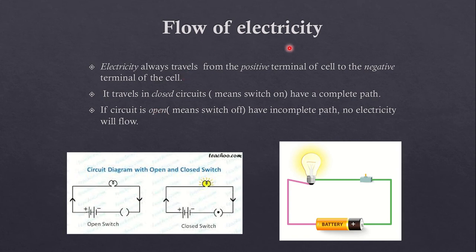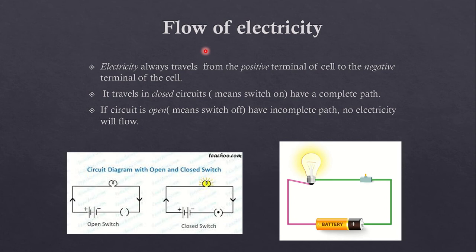Flow of Electricity. What do you mean by flow of electricity? Flow of electricity means current always travels from the positive terminal of the cell to the negative terminal of the cell. We know that when electricity is produced in a cell due to chemical reactions, as there is the presence of chemicals in the cell, chemical reactions take place and electricity is produced.